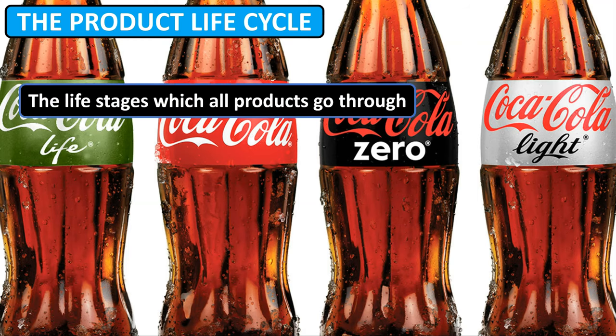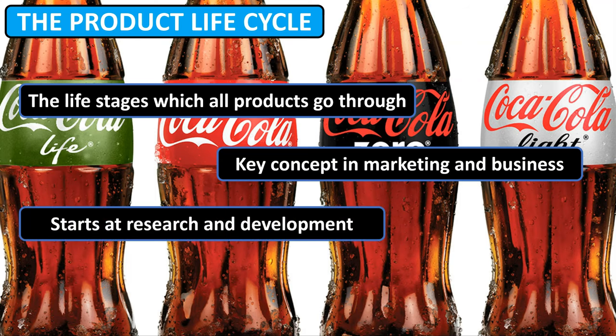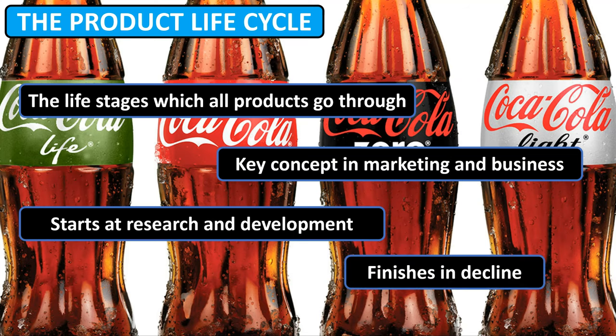The product life cycle is an important concept in marketing. It describes the stages the product goes through, right from the point that the product is just an initial design idea in the research and development stage, until the point that the product is finally removed from the market at the end of its life. However, it's important to note that not all products reach this final stage — some continue to grow while others rise and fall very quickly.